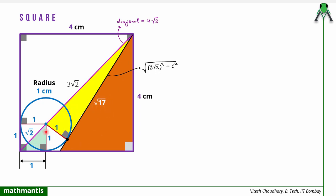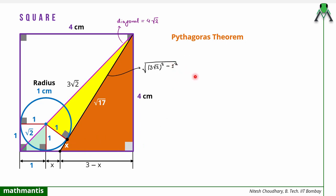We have applied the condition of tangency. Now we will apply the condition of tangency here: these two are tangents drawn from a single external point. So I will assume this length to be x. This length will also be x, because from an external point if two tangents are drawn to a circle, their lengths must be equal. Now I can apply the Pythagoras theorem in this big triangle. I know the full length is 4 cm, this is 1 + x, so the remaining length will be 4 − (1 + x) = 3 − x. In this triangle there is only one variable x, so we apply Pythagoras: 4² + (3 − x)² = (√17 + x)².